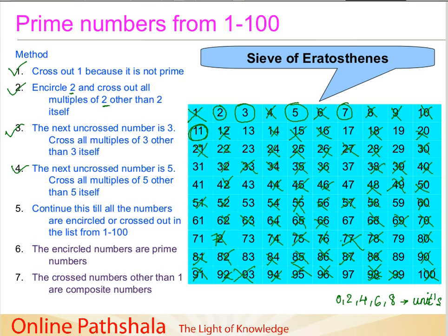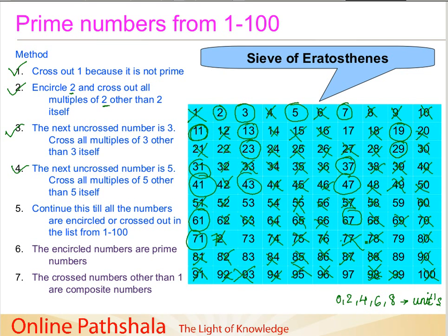We are encircling the next number, which is 11, and checking if there are any remaining multiples of 11. We have already done those. We check 13 — nothing left. Then we go for the remaining numbers: 19, 23, 29, 31, 37. I am just encircling the numbers fast: 41, 43, 47, 61, 67, 71, 79, 83, 89.